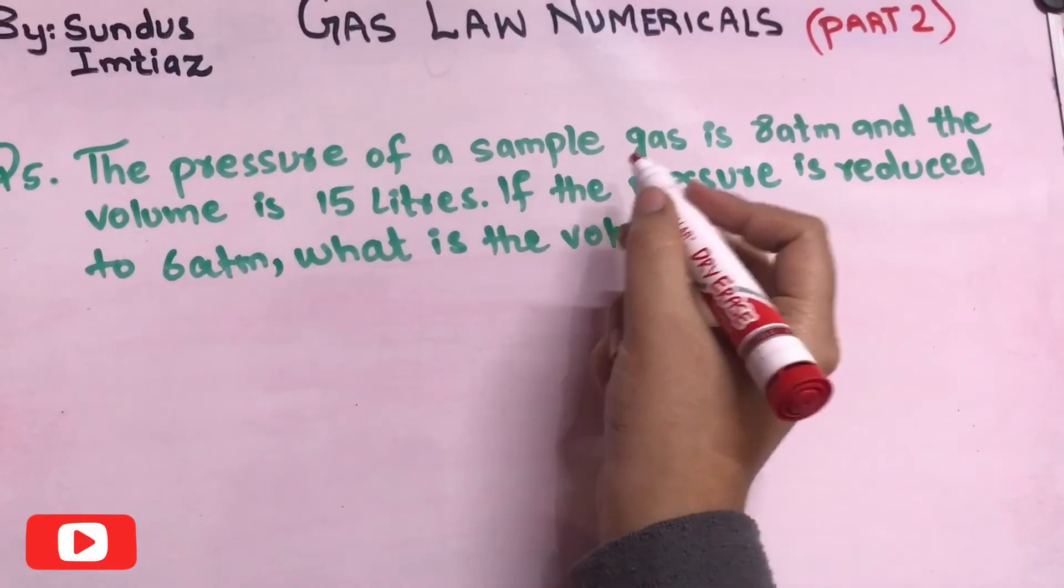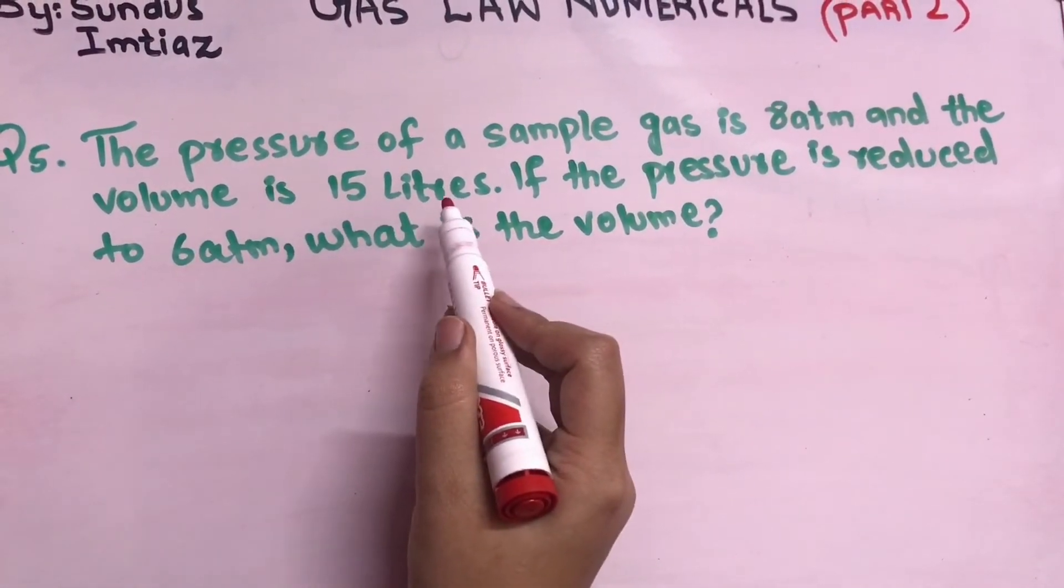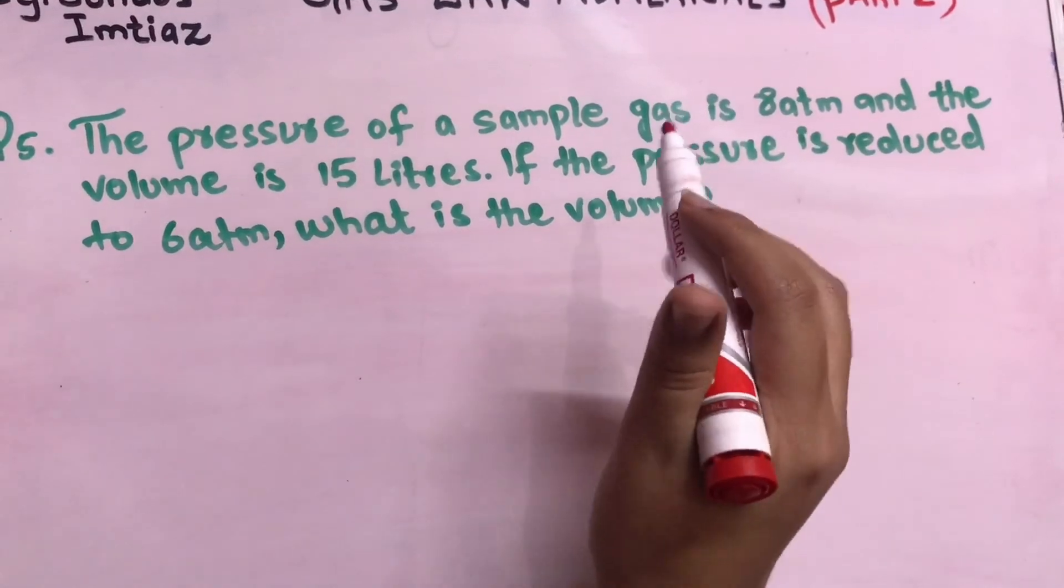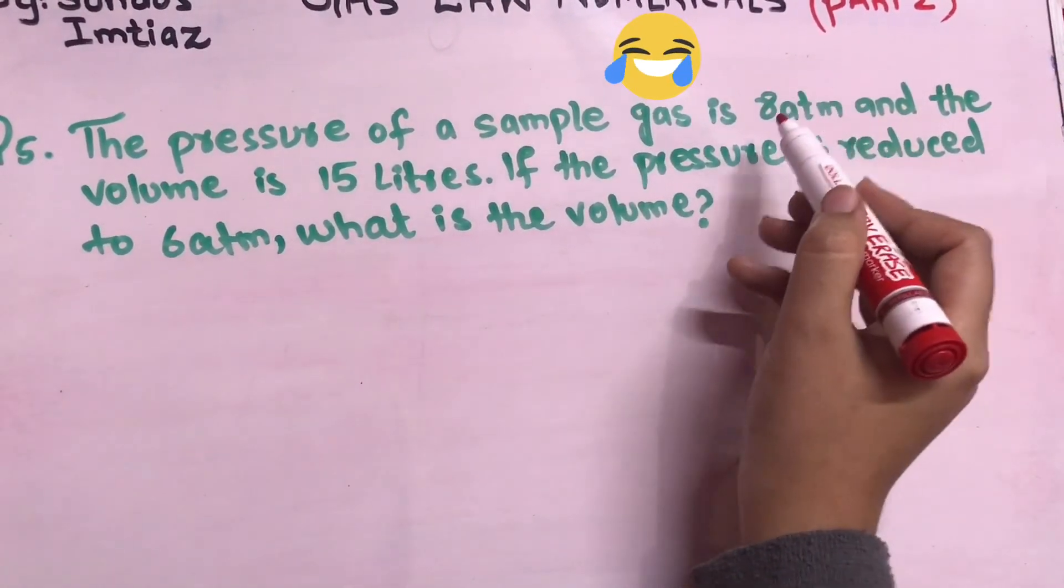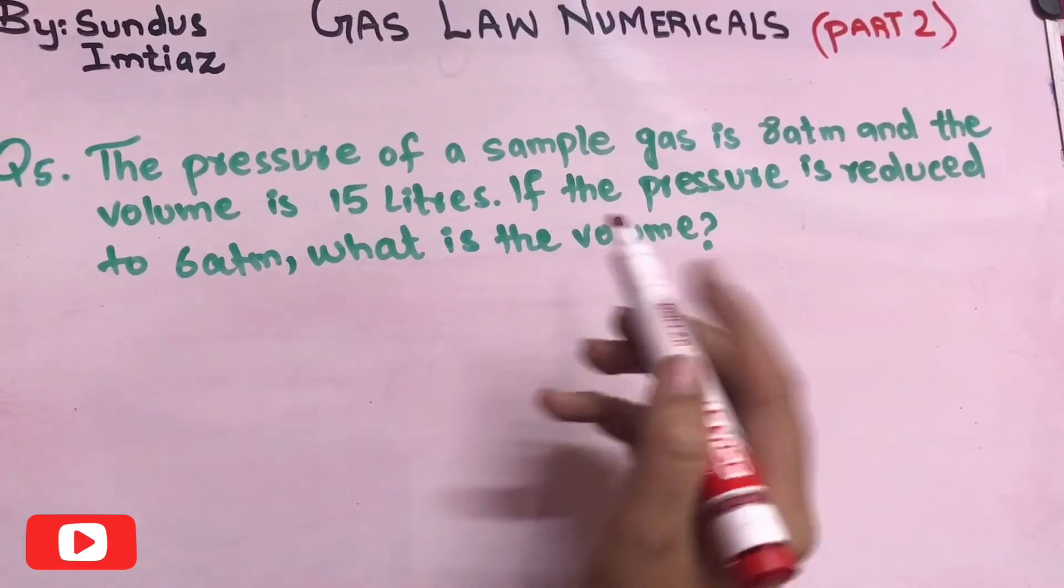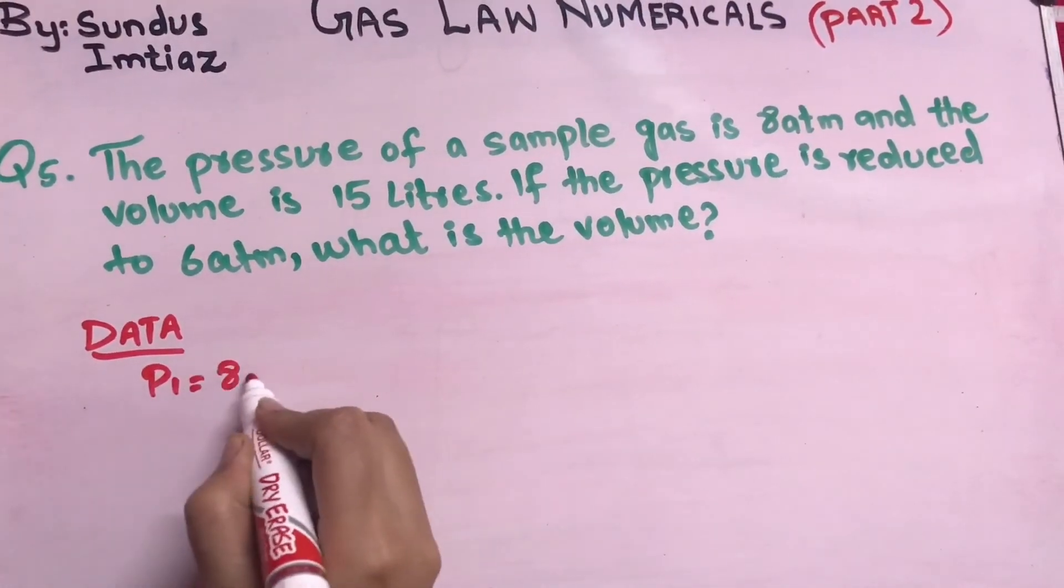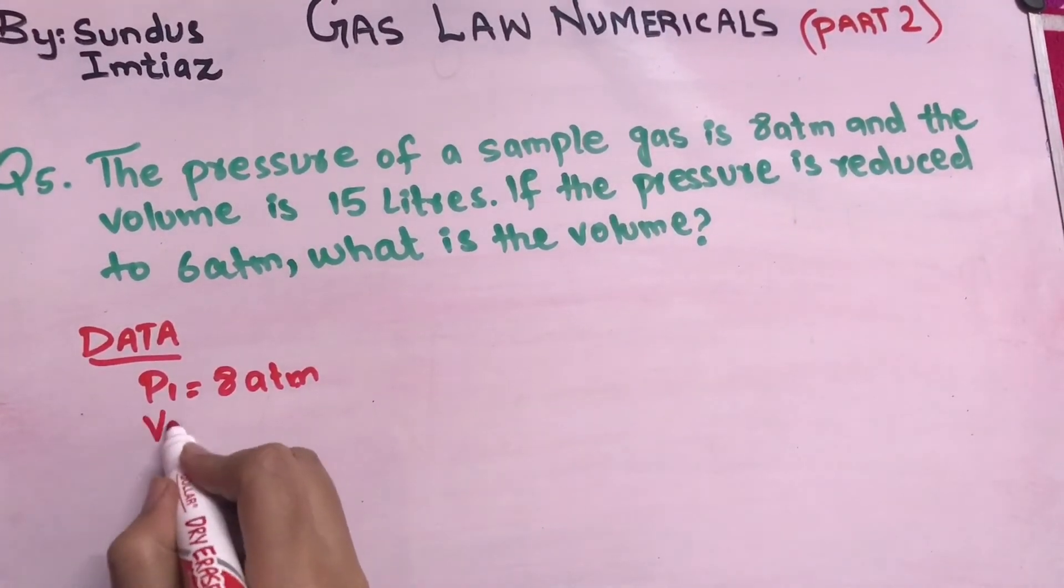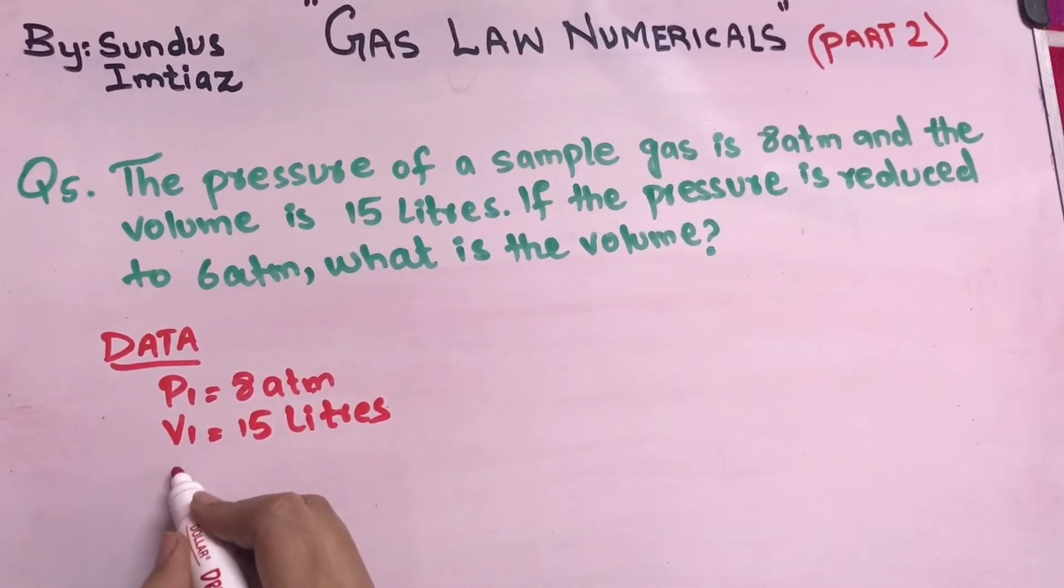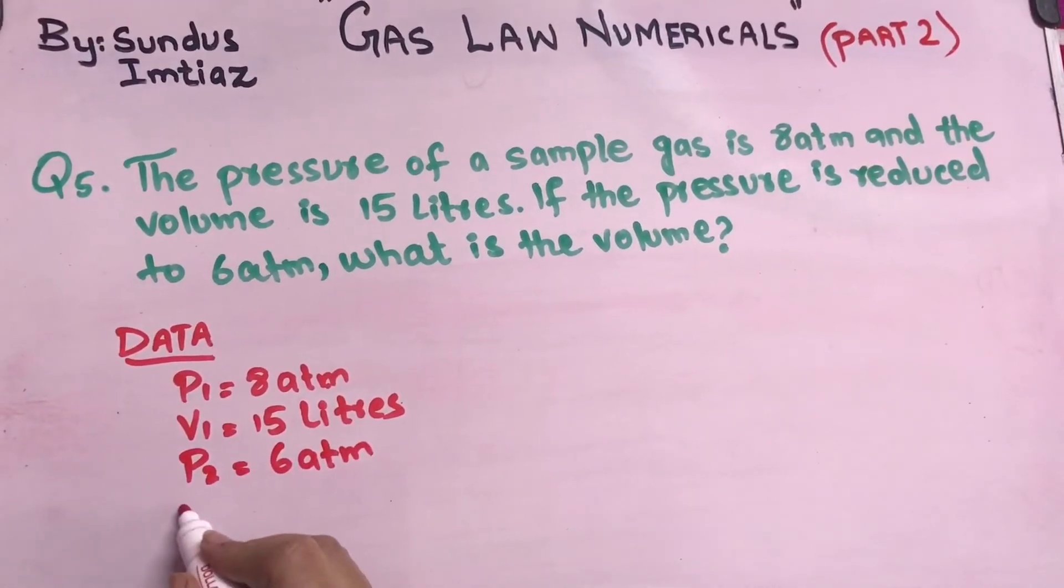The pressure of a sample gas is 8 atm, means the pressure is given that is 8 atmospheric, and the volume is 15 liters. They have given the p1 and v1. If the pressure is reduced to 6 atm, means they have reduced, they have lowered the pressure from 8 atm to 6 atm. What is the volume? So they are asking about the final volume. Let's make a data. P1 here is 8 atm and v1 here is 15 liters. And the p2 is reduced to 6 atm. They are asking about the final volume.